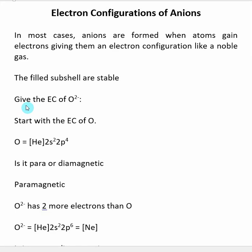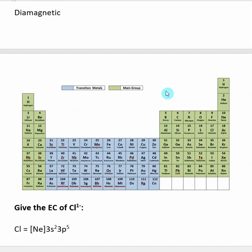In this first example, give the electron configuration of O²⁻. As usual, we want to start by looking at the electron configuration of the neutral species, in this case oxygen. When we go to the periodic table, we find oxygen, we backtrack until we find the noble gas core, which is helium.